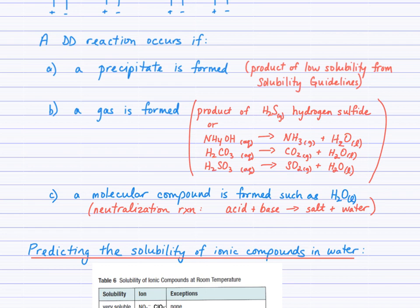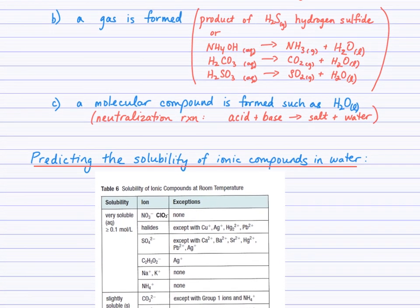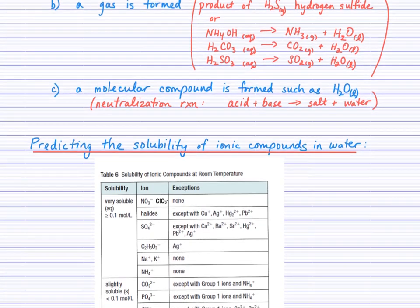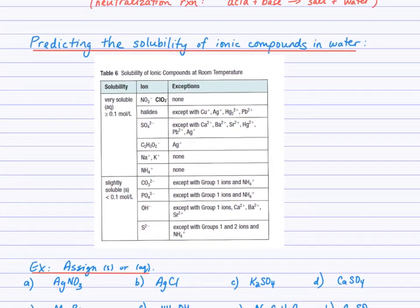A third option for a double displacement reaction occurring is if a new molecular compound is formed. We'll commonly see that with neutralization reactions where water is formed — a refresher on that pattern where an acid and base combine to form a salt and water.